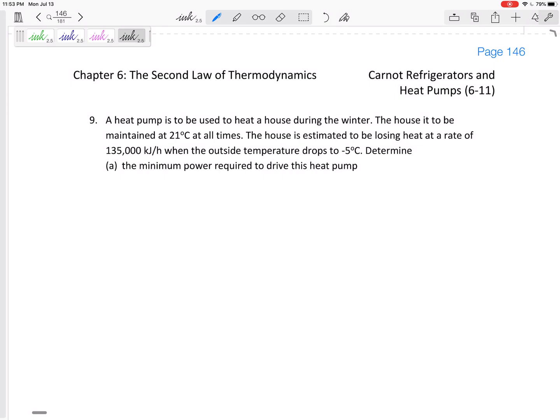The house is to be maintained at 21 degrees C at all times. The house is estimated to be losing heat at a rate of 135 kilojoules per hour. If the house is losing heat at that rate, then doesn't that mean we need to be pumping heat into the house at that rate? The outside temperature is negative 5 degrees.